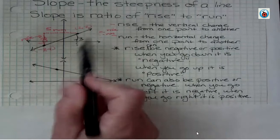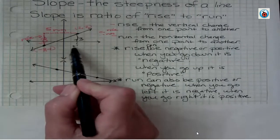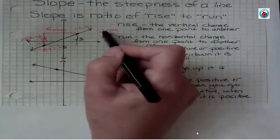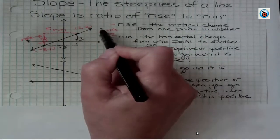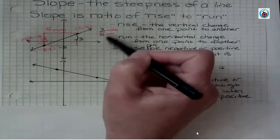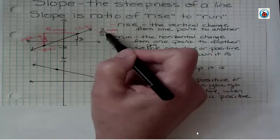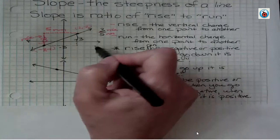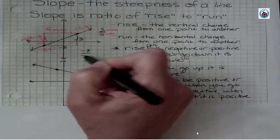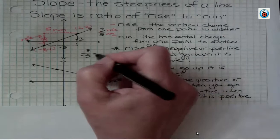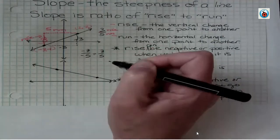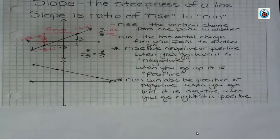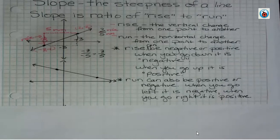Going from the right point back to the left, we'd have negative three over negative five, and do you see that negative three over negative five simplifies to three-fifths? So it doesn't matter if you go from the left point to the right point or the right point back to the left — it's going to be the same after you simplify. For my purposes, I always go from left to right, maybe because I read that way.